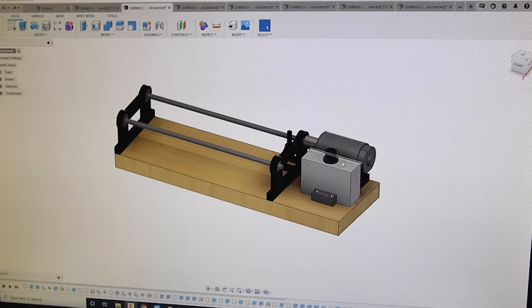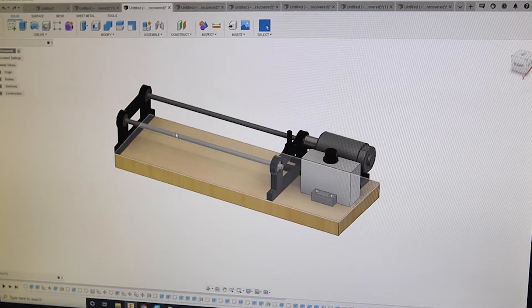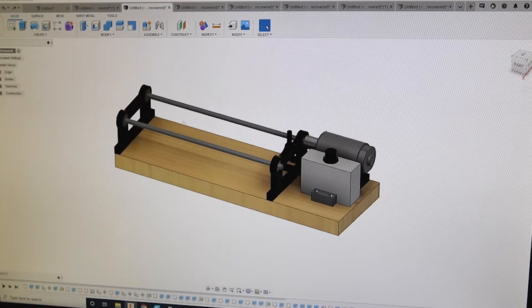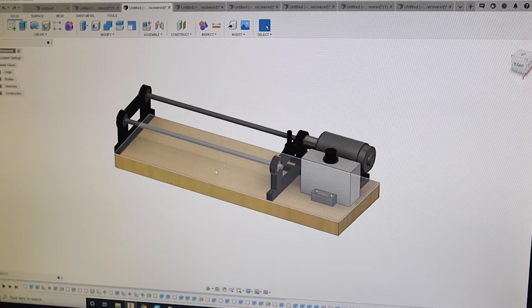Right here we have our motor and our speed controller with a little knob to adjust the speed. And then we have our bars, one and two. And then we have our parts that we designed. So this is the first side and then this is the second side over here. And this is the wooden base.